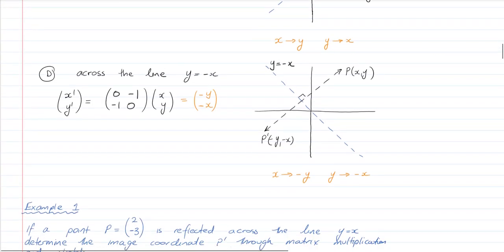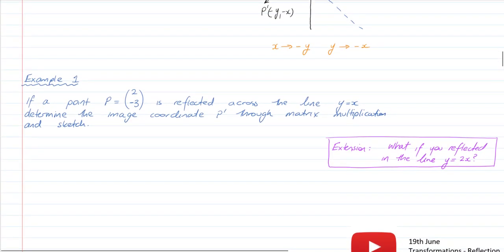So let's have a look at a quick example. If the point 2, 3 is reflected across the line y equals x, determine the image coordinate p-dash through matrix multiplication and sketch.